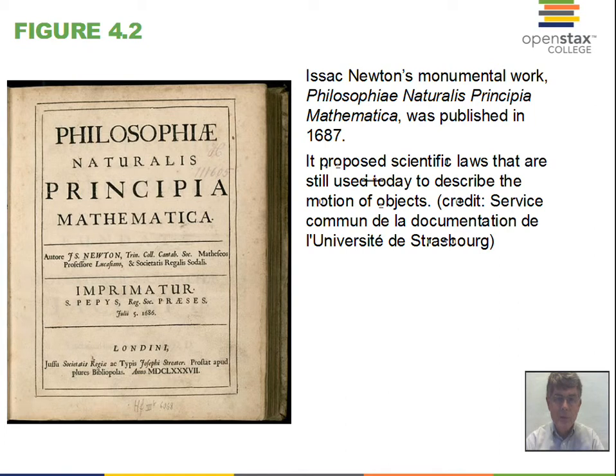Newton lived in the 1600s and towards the latter part of the 1600s he eventually published a book that contains his outline of the scientific laws that describe motion. He worked on this in the 1660s and eventually was encouraged to publish his work.